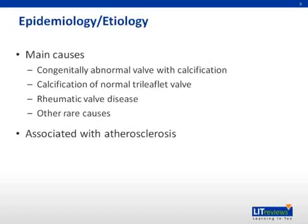The second main cause of valvular aortic stenosis is calcification of a normal trileaflet valve. This is especially common in patients who have chronic kidney disease, as they are predisposed to calcium deposition. The third main cause of valvular aortic stenosis is rheumatic heart disease, which almost always is associated with mitral stenosis as well when it affects the aortic valve.